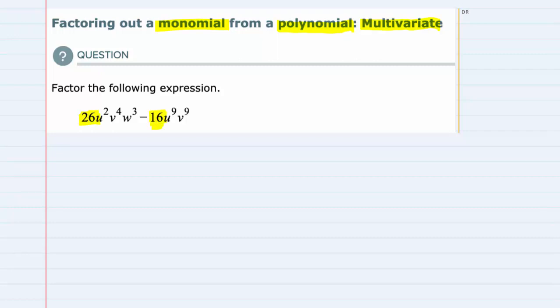Over on the side I'm going to list out the factors of 26 and 16. 26 can be written as 1 times 26, 2 times 13, and that's it for our factors for 26.